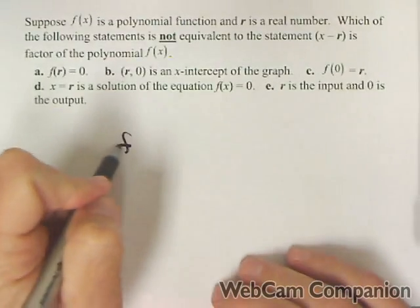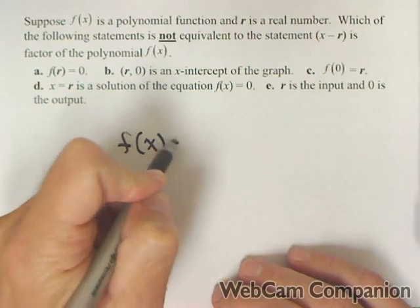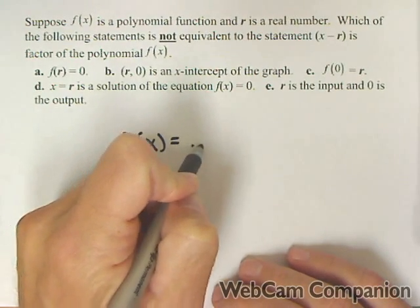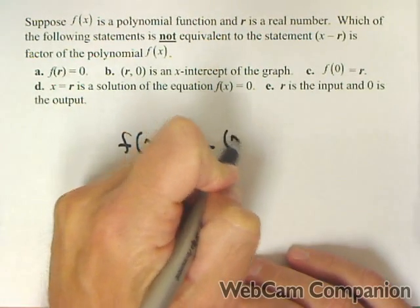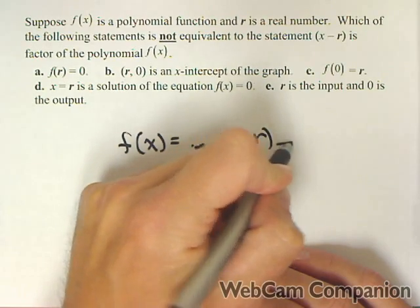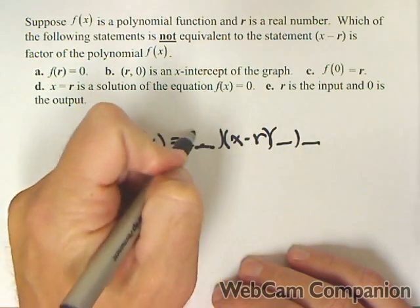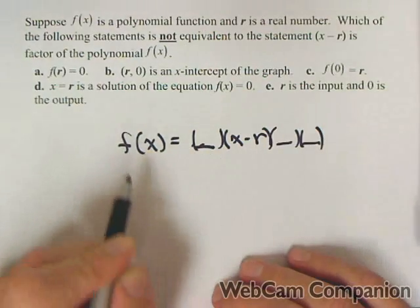So that means if we wrote f of x in its factored form, it would be some factor times x minus r times maybe some other factors. So this is one of the factors.